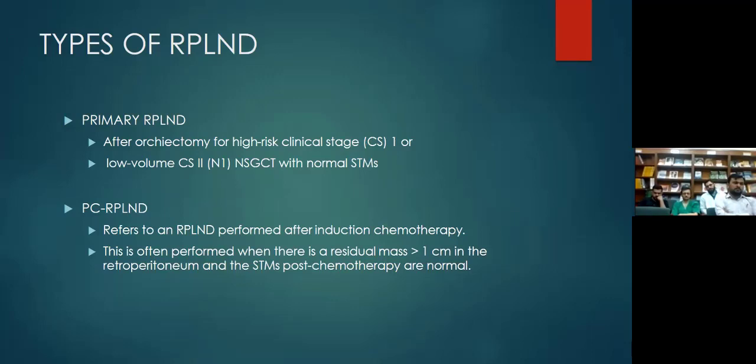Post-chemotherapy RPLND is performed after induction chemotherapy — first-line chemotherapeutic agents — typically where there is a residual mass greater than 1 cm and post-chemotherapy serum tumor markers are normal. If the mass is less than 1 cm post-chemotherapy, we have an option of surveillance or nerve-sparing RPLND.